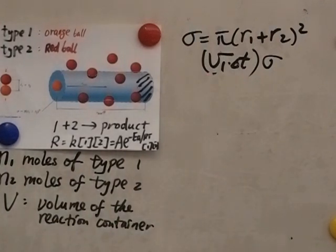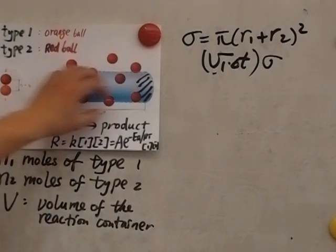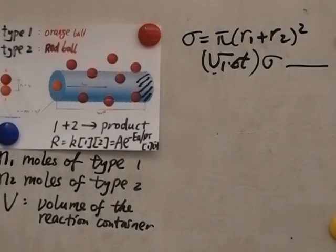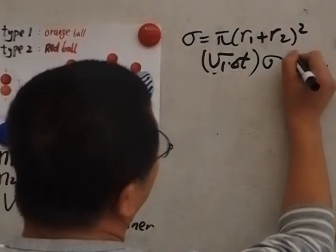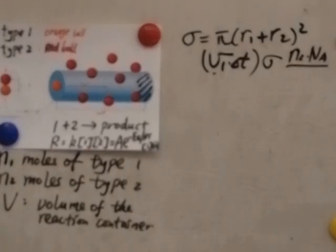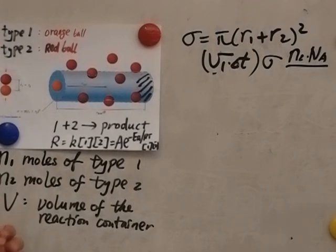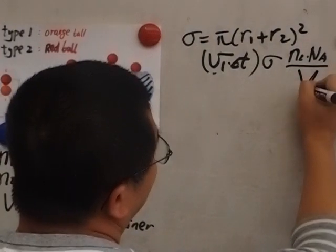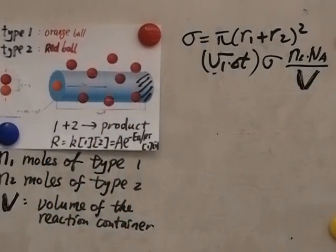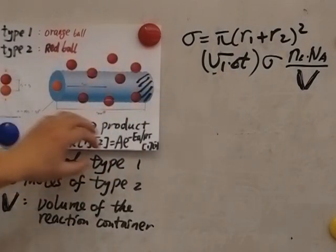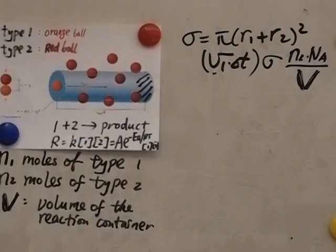This is the volume of the cylinder. What about the number of type 2 molecules inside the cylinder? We know the number density of the type 2 molecules, which is n₂ times the Avogadro constant — that's the total number of type 2 molecules — divided by V, the large uppercase V, the volume of the reaction container. That tells you the number of type 2 molecules with their center inside this cylinder.